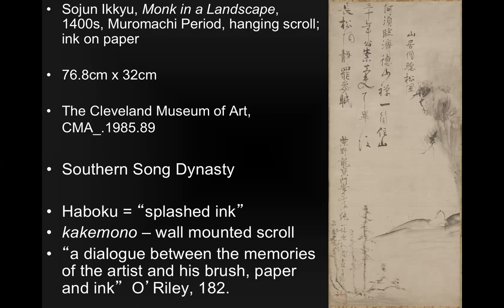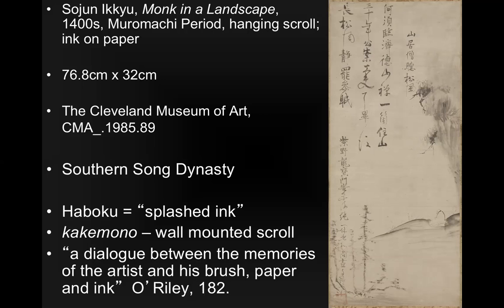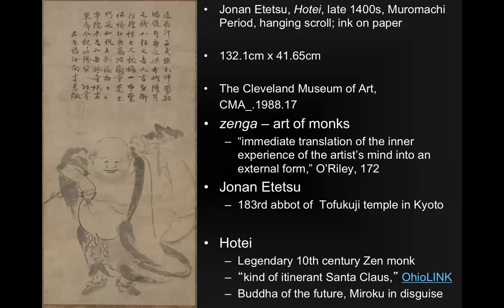There's actually a figure in this painting. If you haven't seen it yet — there he is — just a few lines to define this particular figure. This is Jonan Itetsu. They call the art made by monks like this Zenga, the art of monks — an immediate translation of the inner experience of the artist's mind into an external form.